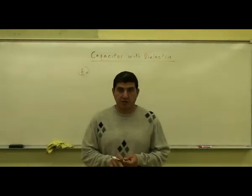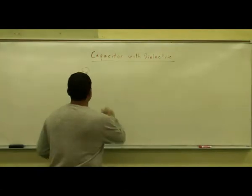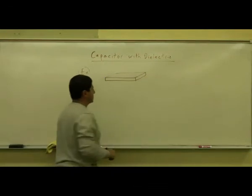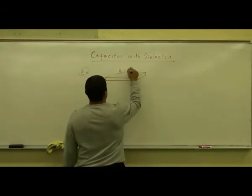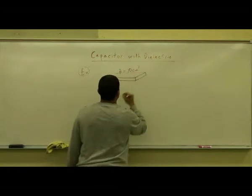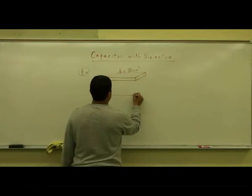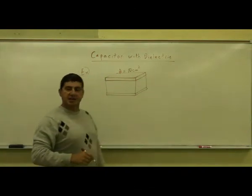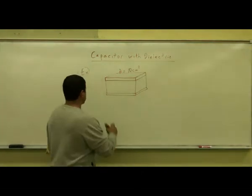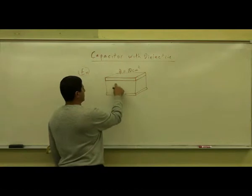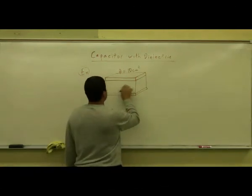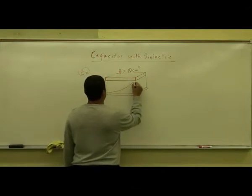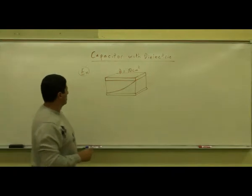We're going to work an example with a capacitor with two dielectrics of different dielectric constants. It's a parallel plate capacitor with a surface area — let's make it something like 10 centimeters squared. The two dielectrics are separated at an angle or curved function, for example a straight diagonal or even a curved function like this.